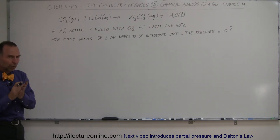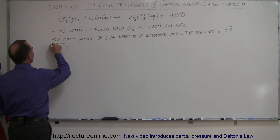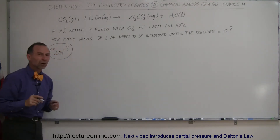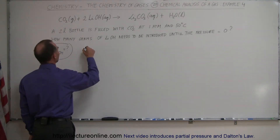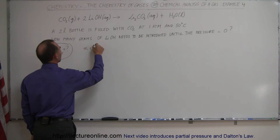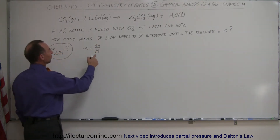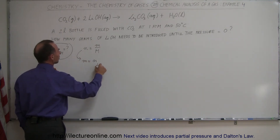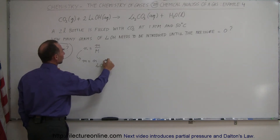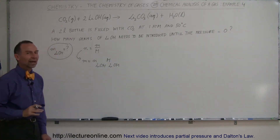First, let's establish what we're looking for. We're looking for the mass of lithium hydroxide — that equals our unknown. We want to compare the mass of lithium hydroxide to the number of moles, using the relationship that the number of moles equals mass divided by molar mass. So the mass equals the number of moles of lithium hydroxide times the molar mass of lithium hydroxide. That's how we find the mass.